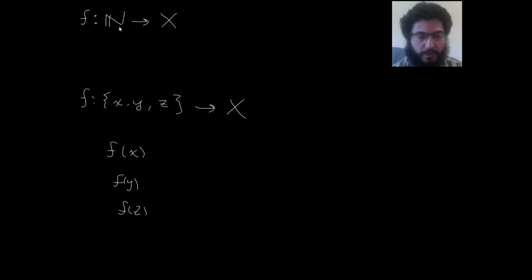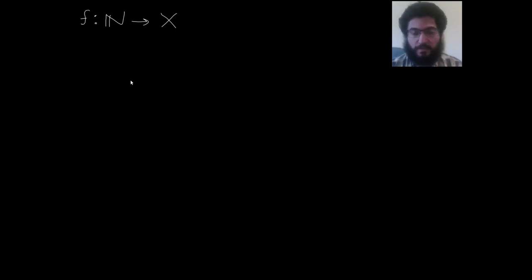But what about when the domain is one of our first seemingly infinite sets? Well, what is the set of natural numbers? The main thing we know about it is that it's an inductive set, and that it's the smallest inductive set. So it contains zero, and it contains the successor — the next — of anything that it contains.